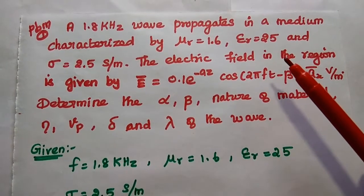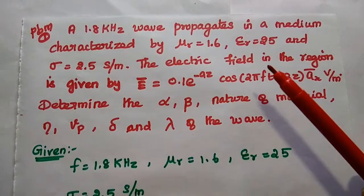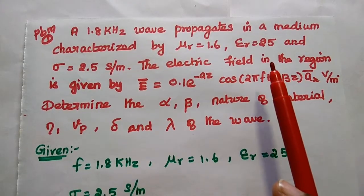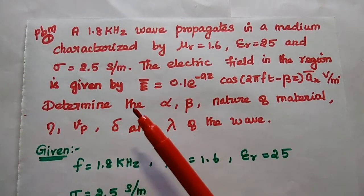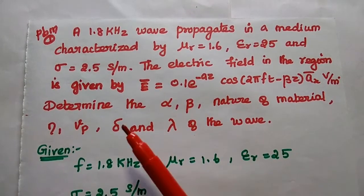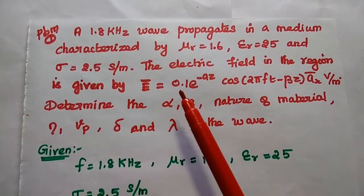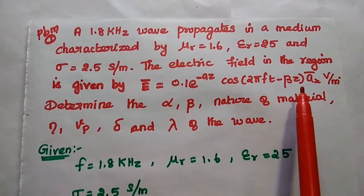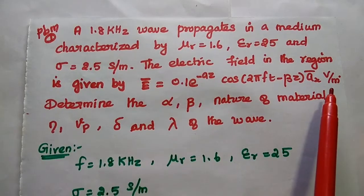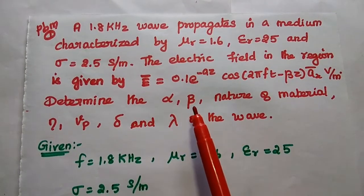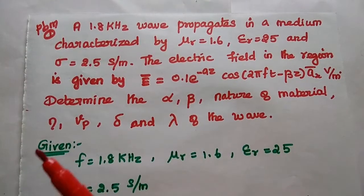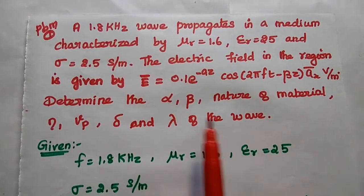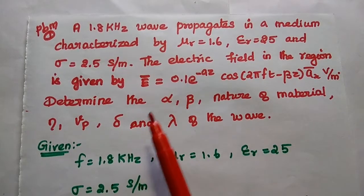Let's solve an important problem. A 1.8 kilohertz wave propagates in a medium characterized by mu r equal to 1.6, epsilon r equal to 25, and sigma equal to 2.5 siemens per meter. The electric field is given by E vector equal to 0.1 e to the power minus alpha z, cosine of 2 pi f t minus beta z, in the a x direction, in volts per meter. Determine the attenuation constant, phase shift constant, nature of the medium, intrinsic impedance, phase velocity, skin depth, and wavelength.